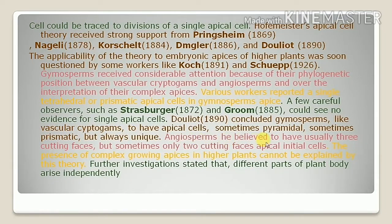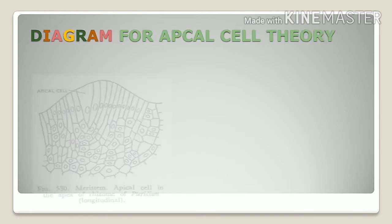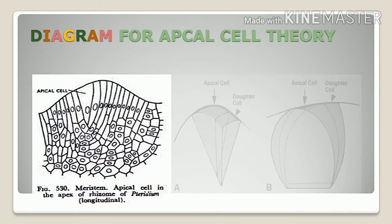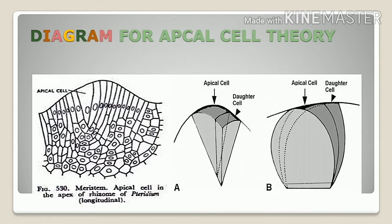The apical initial cells were believed to have usually three cutting faces, but sometimes only two cutting faces. The presence of complex growing apexes in higher plants cannot be explained by this theory. Further investigation stated that different parts of the plant body arise independently. In the diagram for apical cell theory, we can see a single apical cell surrounded by daughter cells, from which the whole plant body arises.